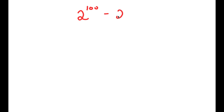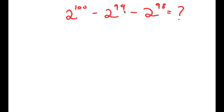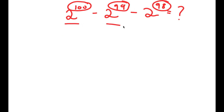In this video, I'm going to be teaching you how to solve the problem 2 to the power of 100 minus 2 to the power of 99 minus 2 to the power of 98. At first glance, you'll probably notice a pattern: we start with exponent 100, subtract one to get 99, subtract one again to get 98 — and all of these are powers of 2. So how are we going to solve a problem like this?